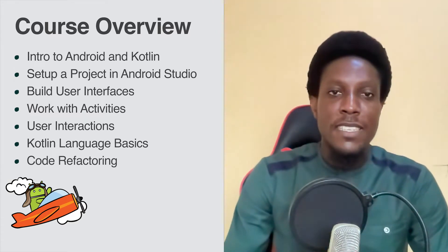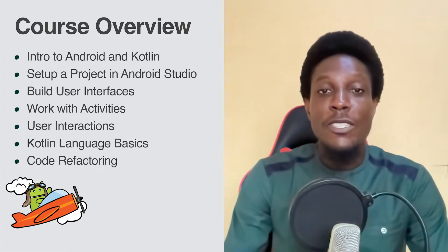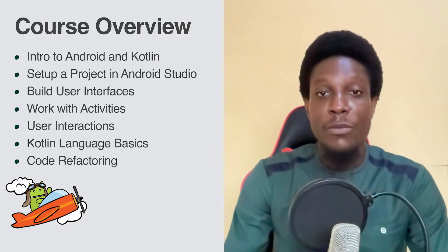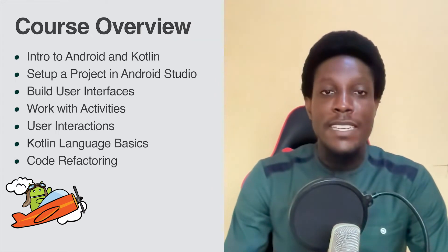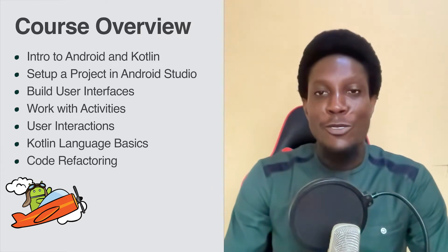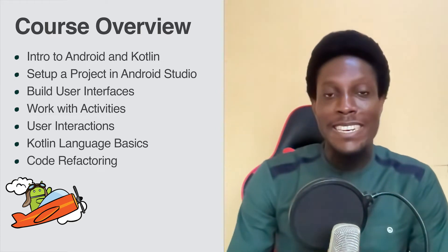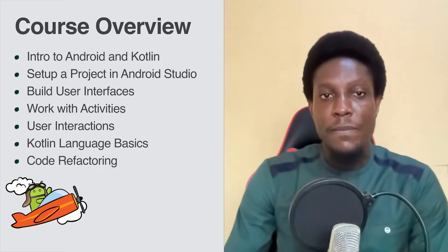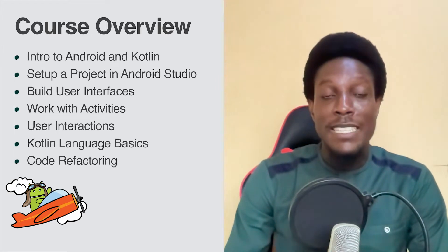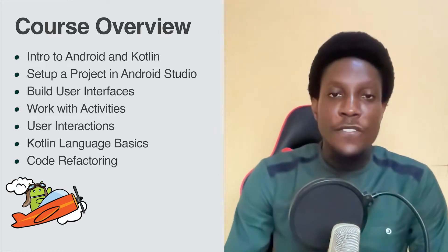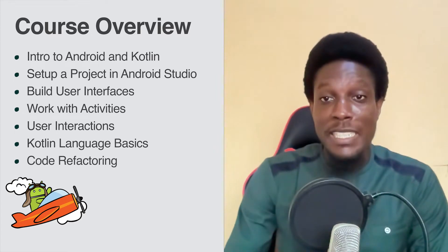Next, you'll create the basic user interface for the Bullseye app. You'll do this using both XML, which is a markup language, and a design view. Then in the next part, you'll learn how to connect the layout you created to code to add interactivity. You'll do this by learning how to work with something called an activity in Android. You'll finish the app by displaying a pop-up dialog whenever the button is tapped.